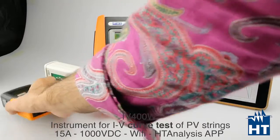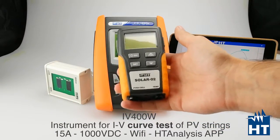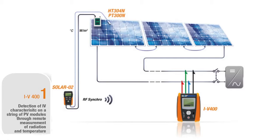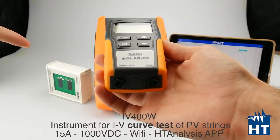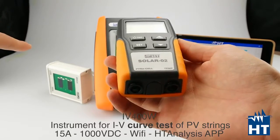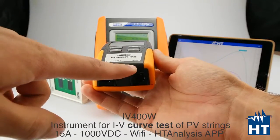Also you have the possibility to buy this optional accessory which is called Solar O2 that can automatize your measurements. You can connect the solar irradiance sensor HT304N and then you can connect also the temperature probe.